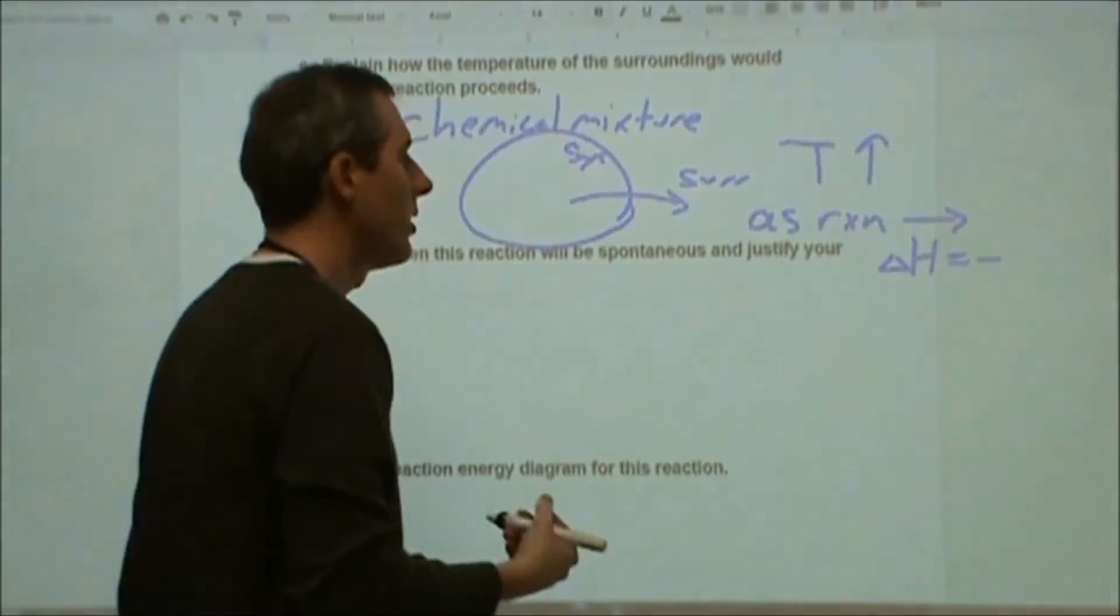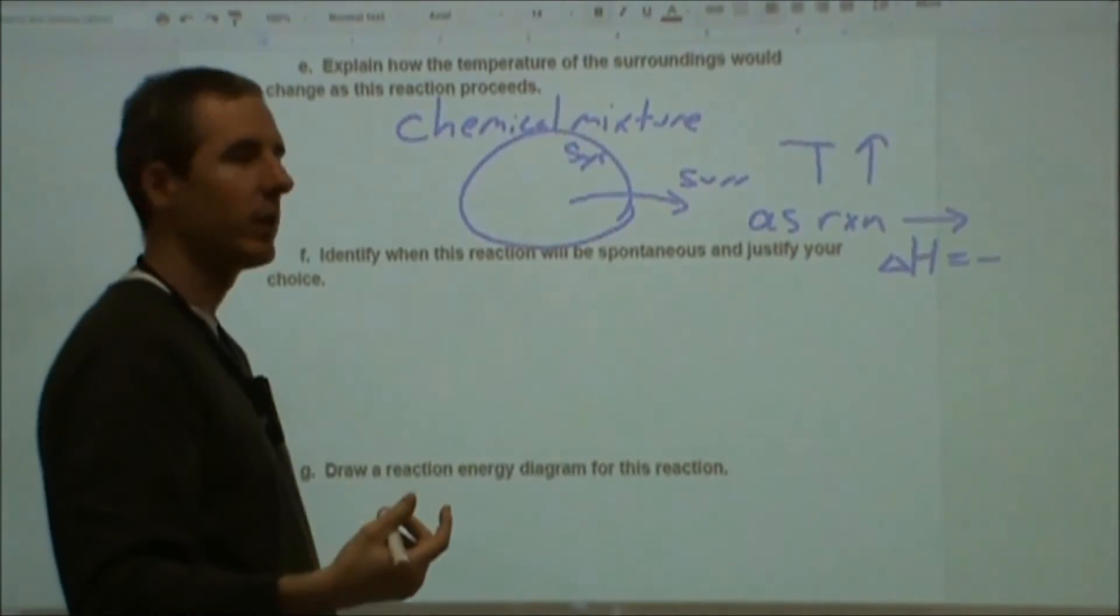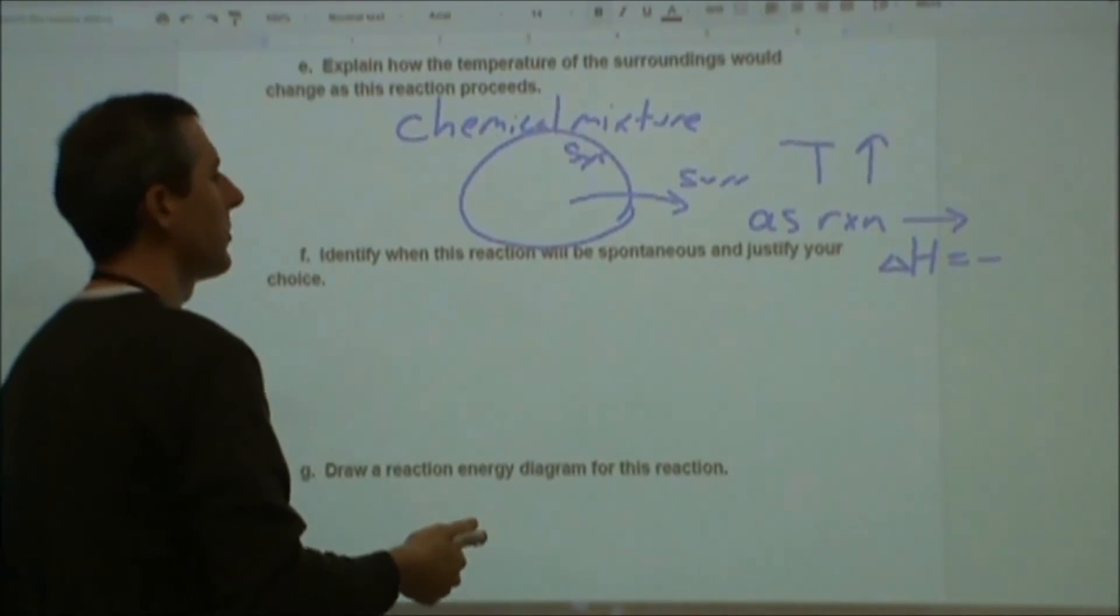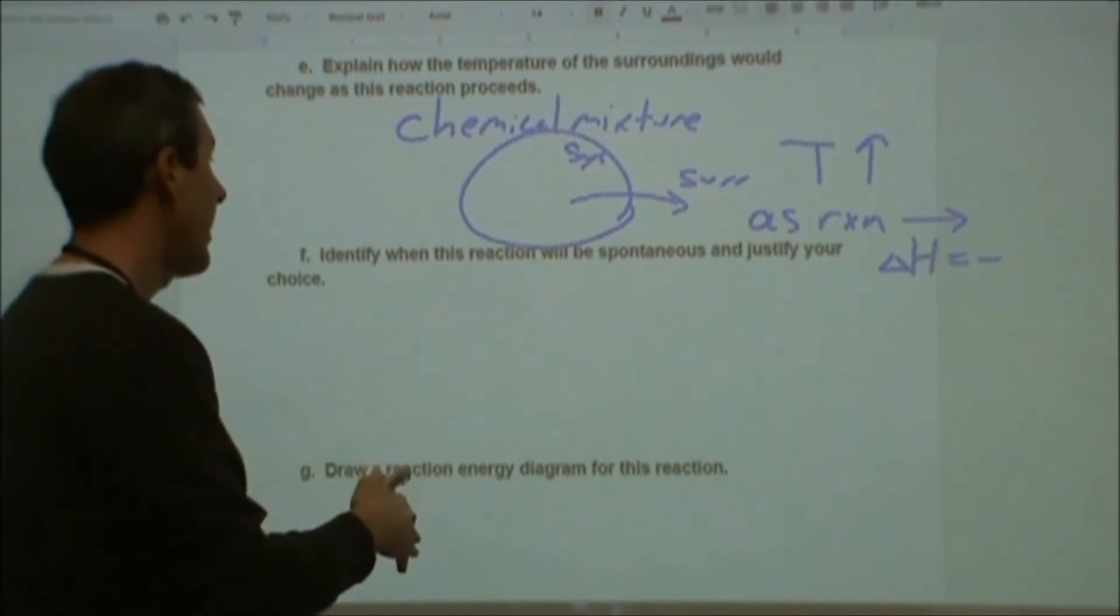So the surroundings are going to see the temperature increase as the reaction proceeds because the enthalpy change is negative. Our system, our chemical mixture is losing energy, that energy is going to go to the surroundings and therefore we expect the temperature to go up.